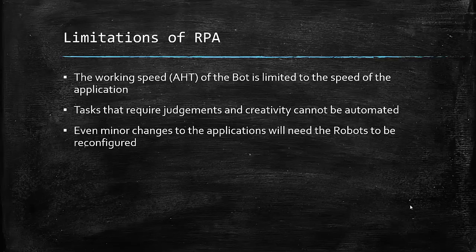Finally, if there is a change to the application's interface, then the bot has to be reconfigured. For example, let's say the bot has to click a button called Save to download a document. If the application team changes the button's label to something else like Download or Finish, or even if they change the position of the button, then the bot has to be reconfigured to identify that button.